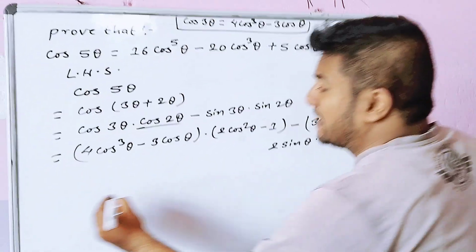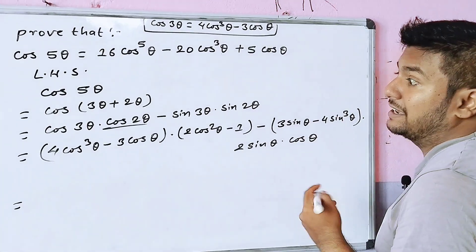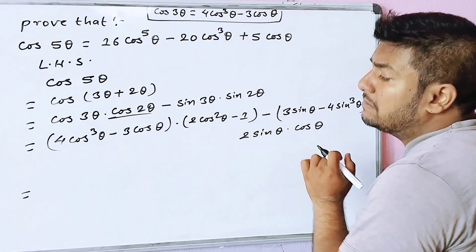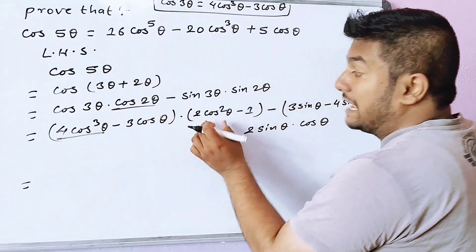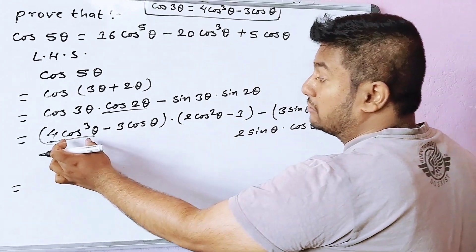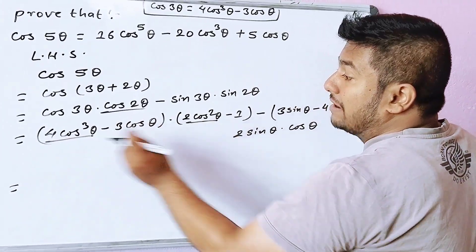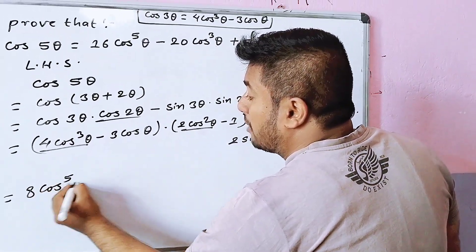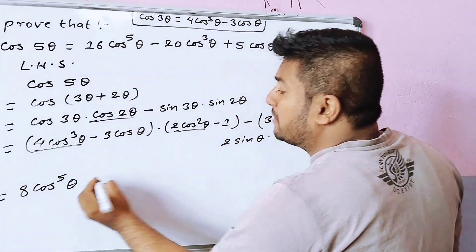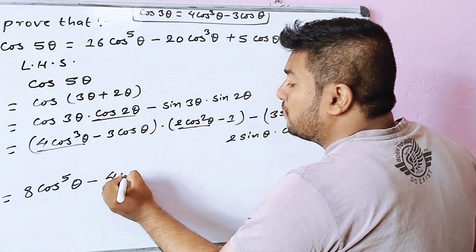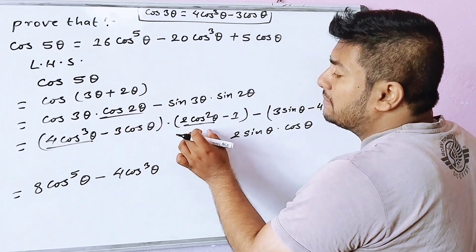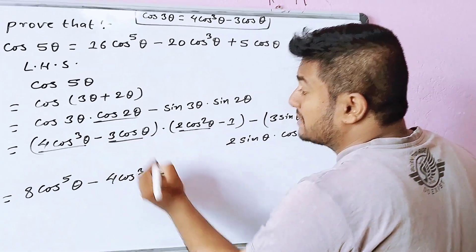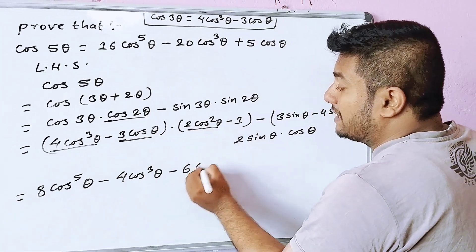Now take this formula to substitute and expand. Multiplying out: 4 cos cubed theta times 2 cos squared theta gives 8 cos to the power 5 theta. Then 4 cos cubed theta multiplied by minus 1 gives minus 4 cos cubed theta. Then minus 3 cos theta times 2 cos squared theta gives minus 6 cos cube theta.